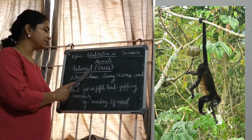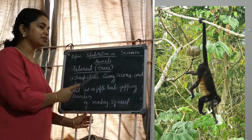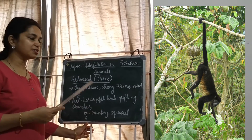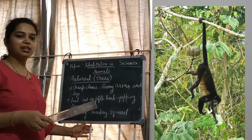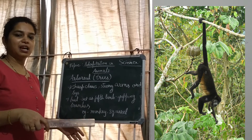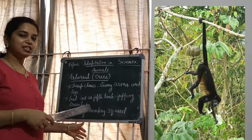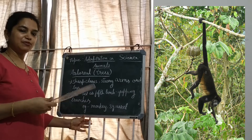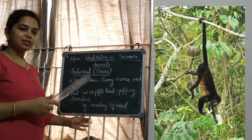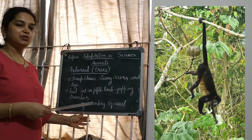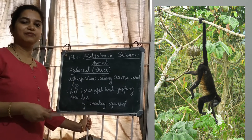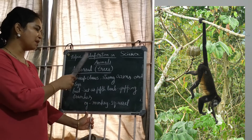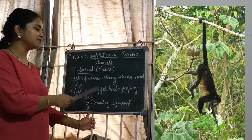Now let's learn about arboreal animals. Arboreal animals are those that generally live on trees. Examples are monkeys and squirrels. Monkeys have sharp claws, strong arms, and strong legs so that they can hold branches firmly and jump from one tree to another. They have a very strong tail so that they can grasp branches firmly and not fall. The tail generally acts as a fifth limb. Monkeys can jump up to 30 feet and move from one tree to another.